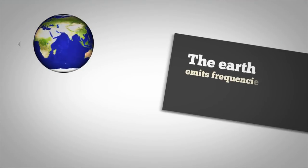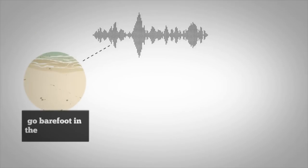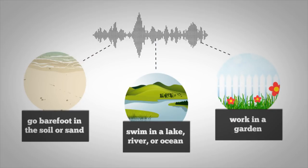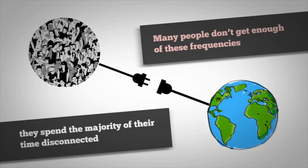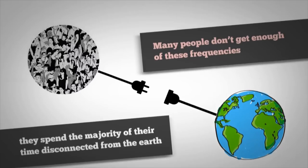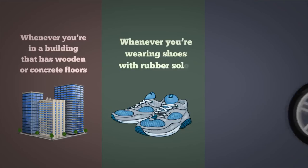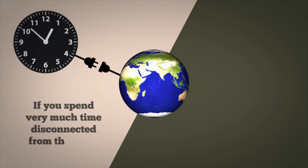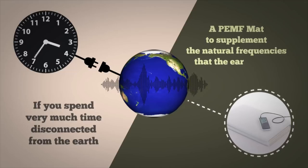The Earth emits frequencies that our bodies need in order to be healthy. You can absorb these frequencies by going barefoot in the soil or sand, swimming in a lake, river or ocean, or working in a garden. Many people don't get enough of these frequencies because they spend the majority of their time disconnected from the Earth. Whenever you're in a building that has wooden or concrete floors, whenever you're wearing shoes with rubber soles or riding in a vehicle with rubber tires, then you're disconnected from the Earth and its frequencies. If you spend very much time disconnected from the Earth, then you should consider using a PEMF mat to supplement the natural frequencies that the Earth emits.